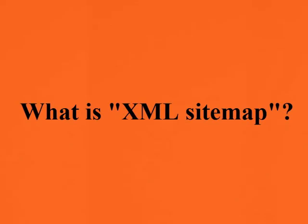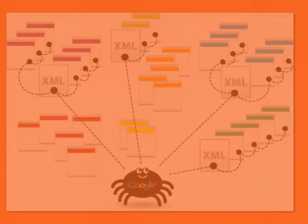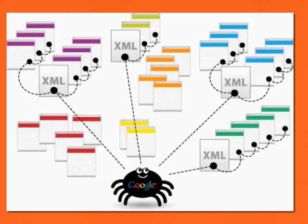What is an XML sitemap? An XML sitemap tells your search engine like Google, Bing, or Yahoo to find out what pages you have on your site, and you can update this sitemap every time you have a new page.